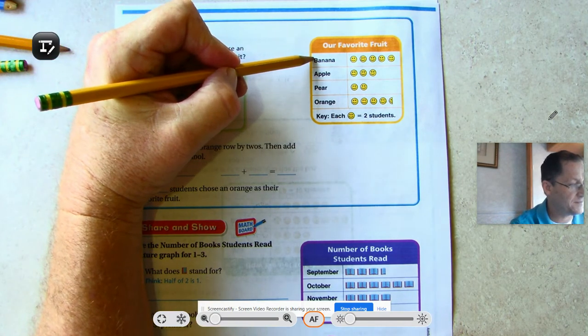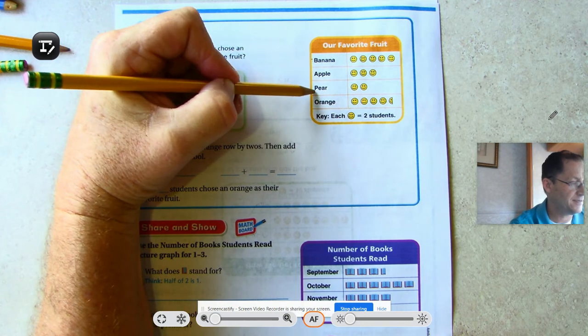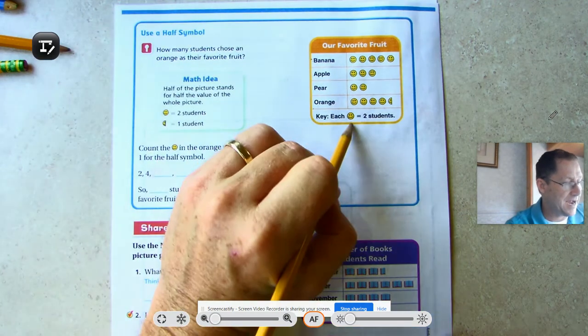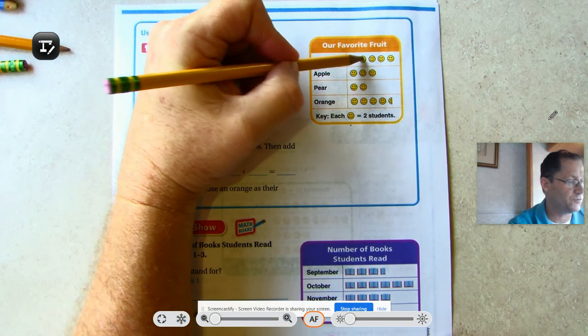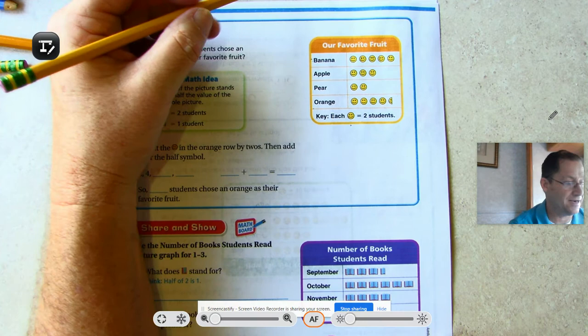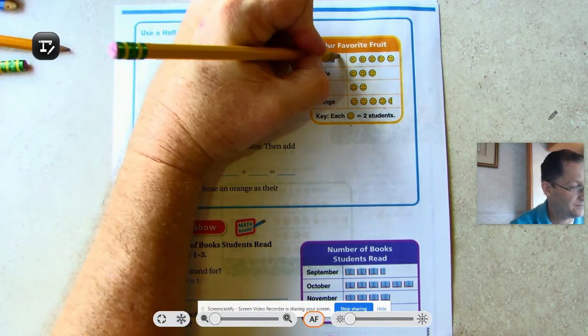Our favorite fruit is the title of the picture graph. We have four different types of fruits: bananas, apples, pears, and oranges. Each happy face in the key stands for two students. So it's not 1, 2, 3, 4, 5 students who chose banana, but rather 2, 4, 6, 8, 10 students chose banana.